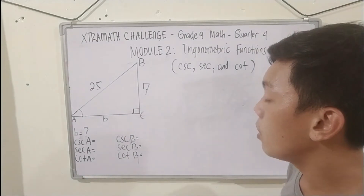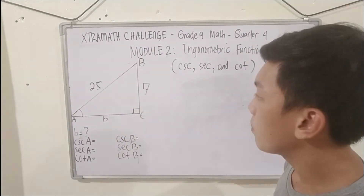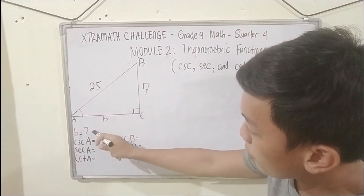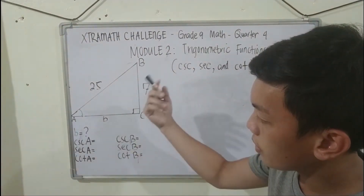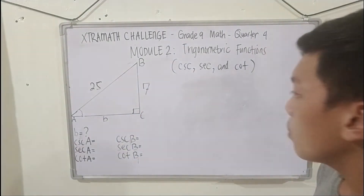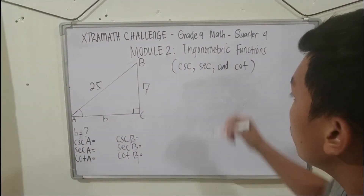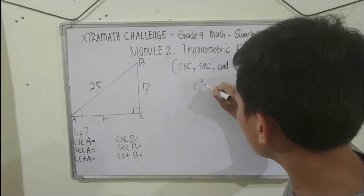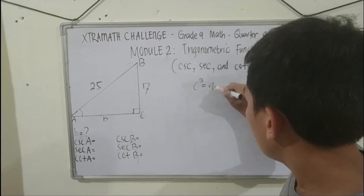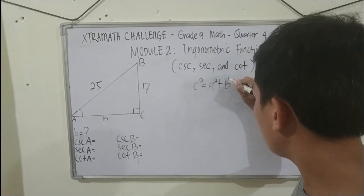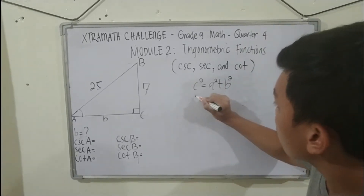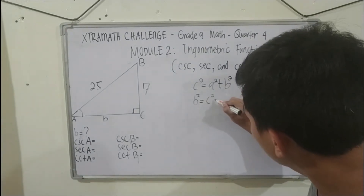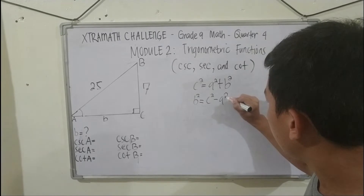We have here a figure of a right triangle. In the first problem, we're asked to find the value of b. To find the value of b, we're going to use the Pythagorean theorem: c squared is equal to a squared plus b squared, so b squared is equal to c squared minus a squared.